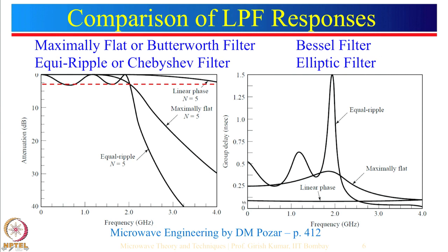For the Bessel filter the group delay response is almost flat, but if you look at the amplitude response, the transition is very very slow. Even at 4 GHz (twice the 2 GHz cutoff), the attenuation is only 3 dB. In contrast, a Butterworth filter at 4 GHz provides about 30 dB attenuation, and a Chebyshev filter may provide close to 50 dB.